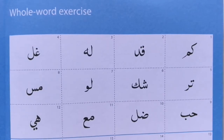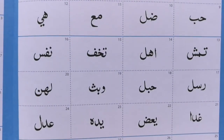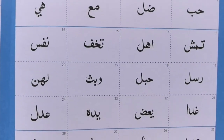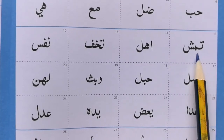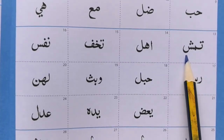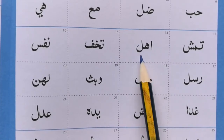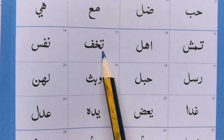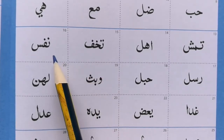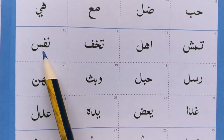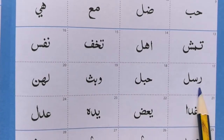Okay, so inshAllah that was straightforward. We'll move on to some words that have three letters in them now. Ta, Meem, Sheen, Alif. Haa, Laam, Laam. Kha, Faa, Nun. Faa, Sin, Ra, Sin.